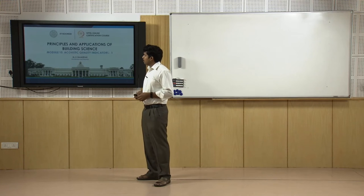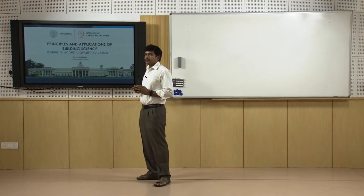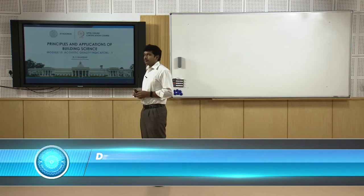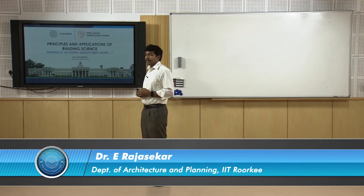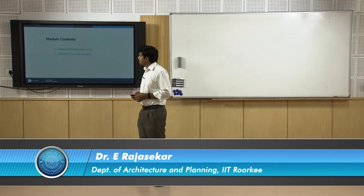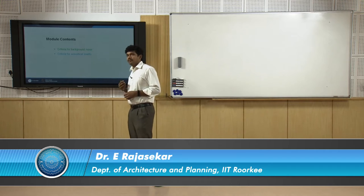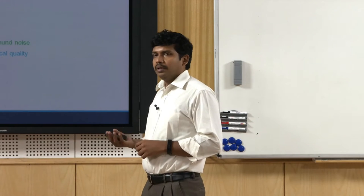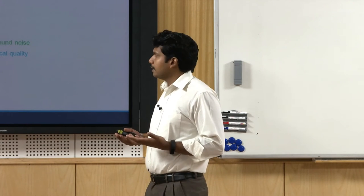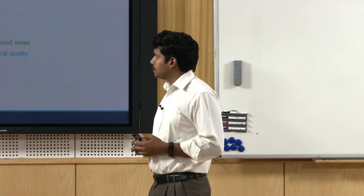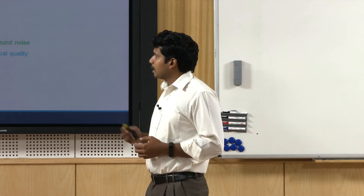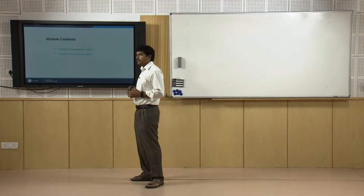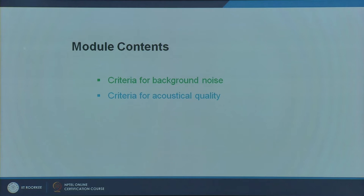In this module we will be talking about acoustic quality indicators. There are two modules in which we will be looking at acoustic quality indicators. This module primarily covers the criteria for background noise — what all are the indicators or indices which we have to understand before we set the background noise level in a given space. Next we will be talking about criteria for acoustic quality — that is, good listening and how it starts.